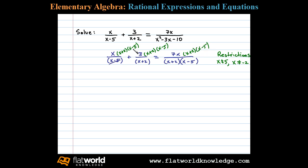Here we can see x minus 5 cancels, and that leaves us with x times x plus 2 plus, here x plus 2 cancels, leaving us with 3 times x minus 5 equals, well here x plus 2 and x minus 5 cancels, leaving us with 7x.